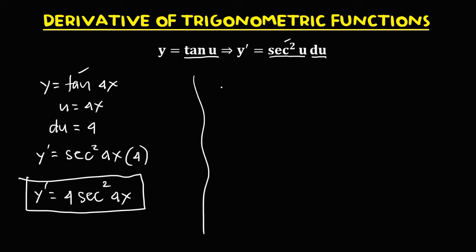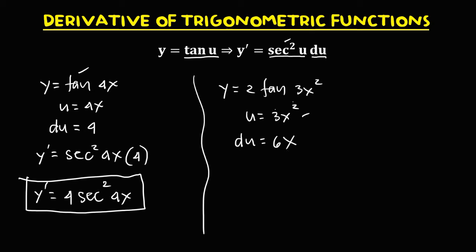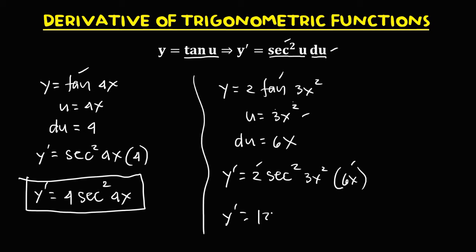For y equals 2 times tangent of 3x squared, u equals 3x squared. To find the derivative of u, using the power rule: 3 times 2 is 6, minus 1 for the exponent gives x, so du equals 6x. To find the derivative: we have 2 times secant squared of 3x squared, times du, that's 6x. So y prime equals 2 times 6x, that's 12x, times secant squared of 3x squared.